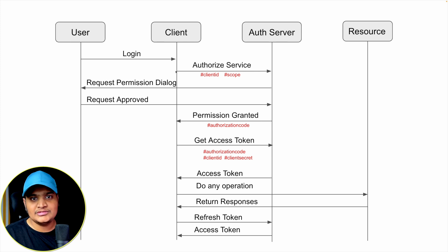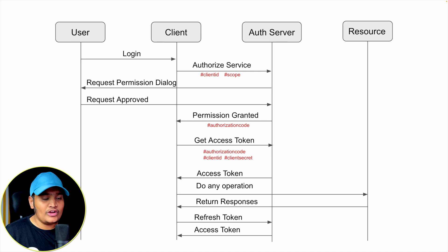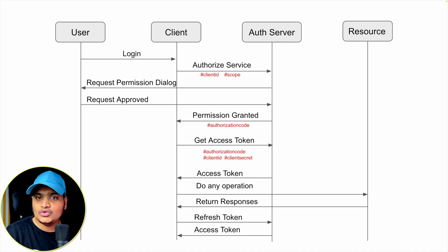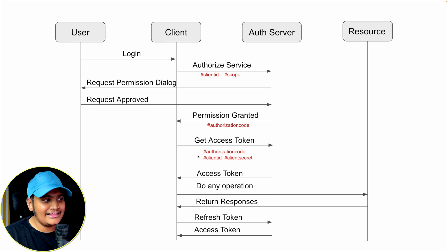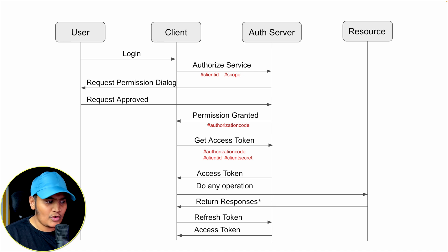With this access token, the client is responsible for accessing all the different resources on the resource server, which holds all our different resources. Whatever APIs or data the client wants to access, every time it must send the access token to the resource server. The resource server will identify that access token and accordingly allow the request and return the responses.